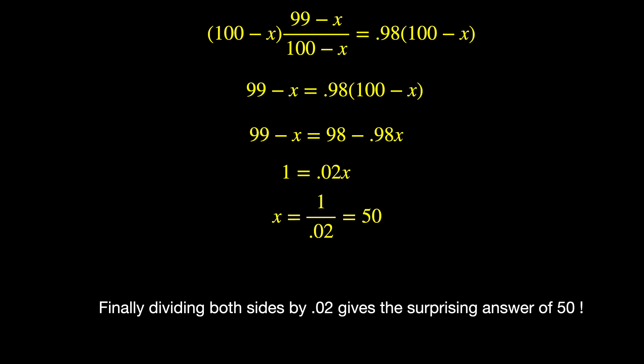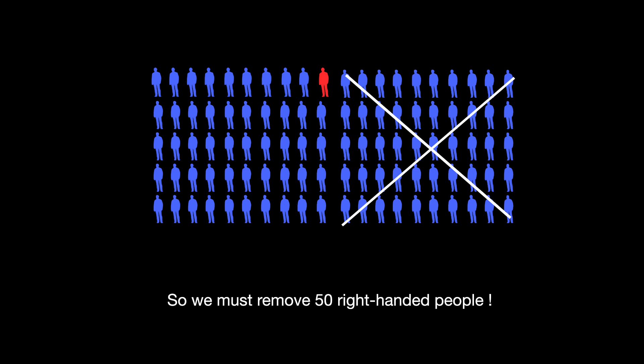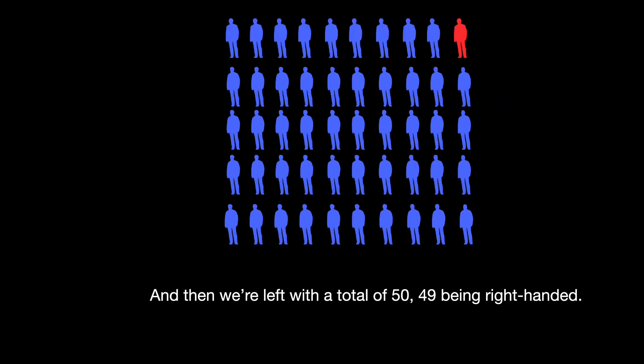Finally, dividing both sides by 0.02 gives the surprising answer of 50. So we must remove 50 right-handed people. And then we're left with a total of 50, 49 being right-handed.